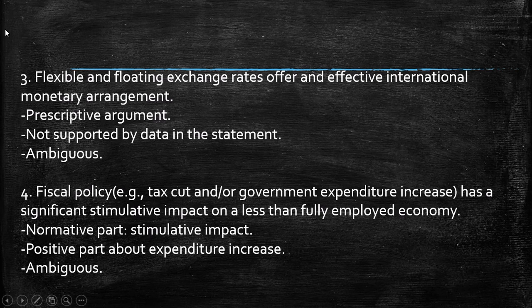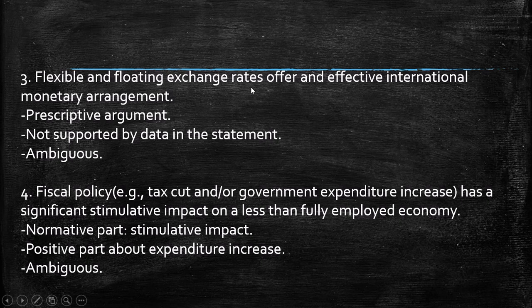The third statement is: flexible and floating exchange rates offer an effective international monetary arrangement. This is like a prescriptive argument but it's not supported by data statements, so it's kind of ambiguous. For example, if it said flexible and floating exchange rates allowed the economy to increase exports by 10%, that would be a fact and more positive. In this case it's neither clearly positive nor normative, so I classify it as ambiguous.